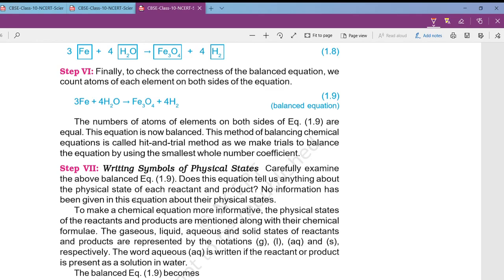Some students tend to do this: whenever there is H2O they multiply higher numbers, leaving four they multiply eight. Eight turns up it becomes 16. Again this side also they are multiplying. That is not the correct method. You should only take the smallest whole number as the coefficient. It is clearly given over here the smallest whole number coefficient should be taken.